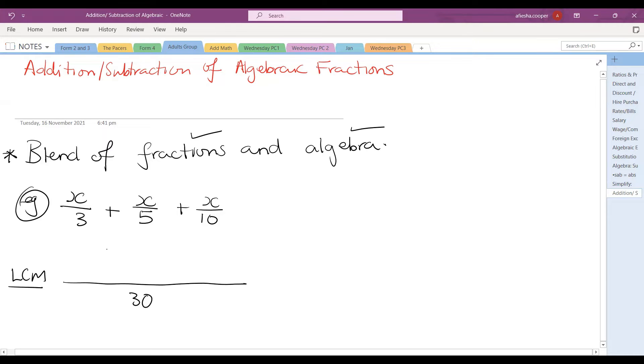Now what we would usually do is say 3 into 30 is 10 and we multiply that 10 by the numerator of the fraction. So this is going to be 10 multiplied by x. 5 into 30 is 6, so this is 6 multiplied by x. 10 into 30 is 3, so this is 3 multiplied by x. From multiplying variables, this gives us 10x plus 6x plus 3x all over 30. They are like terms, so we sum them up, which gives us 19x over 30.